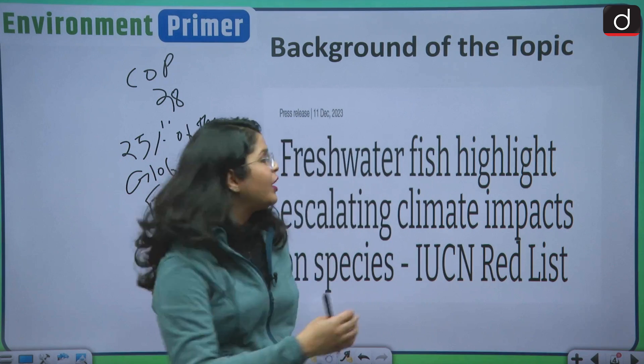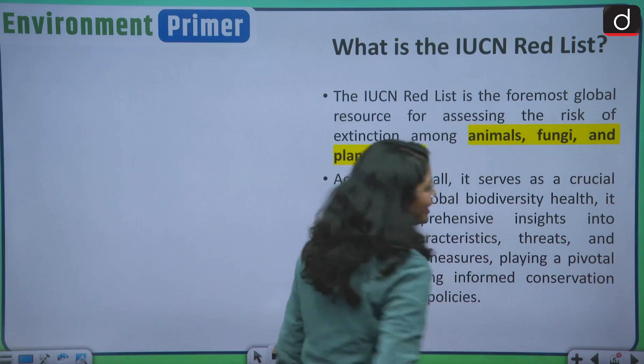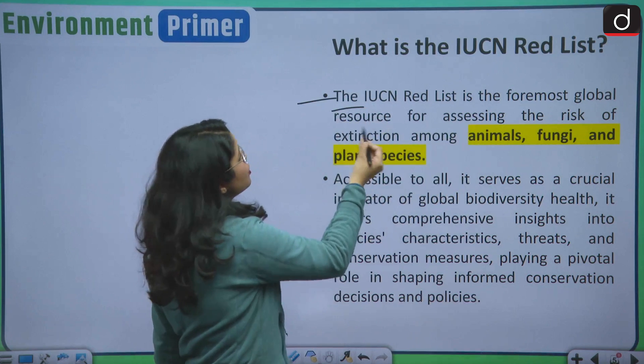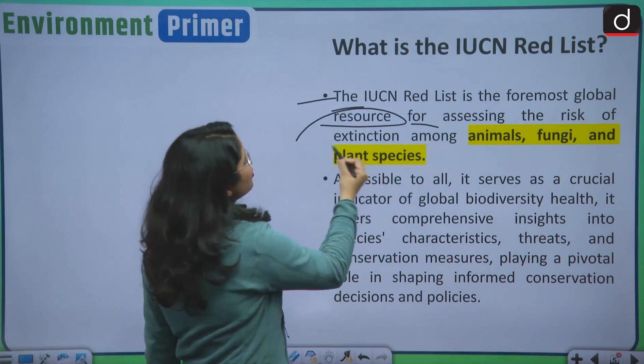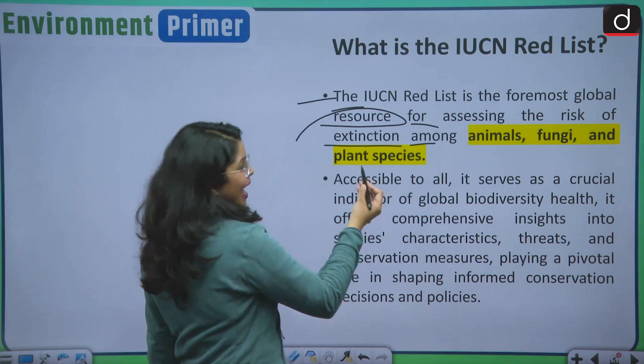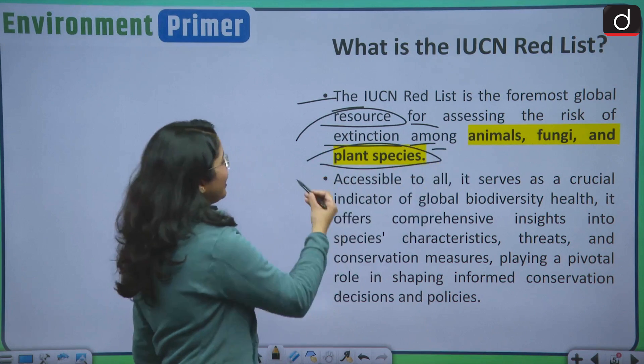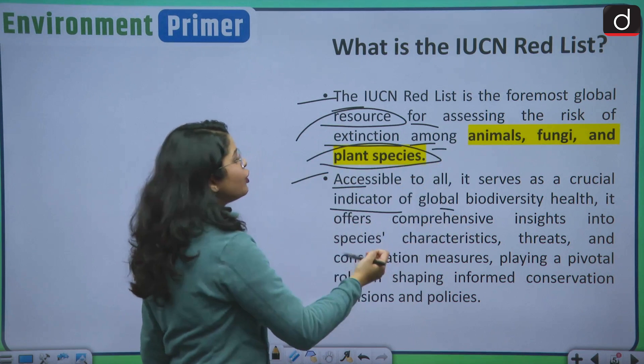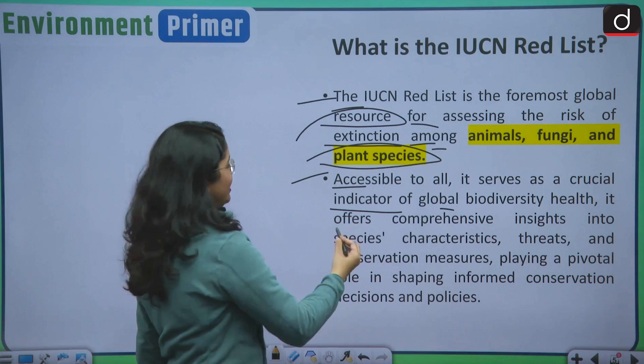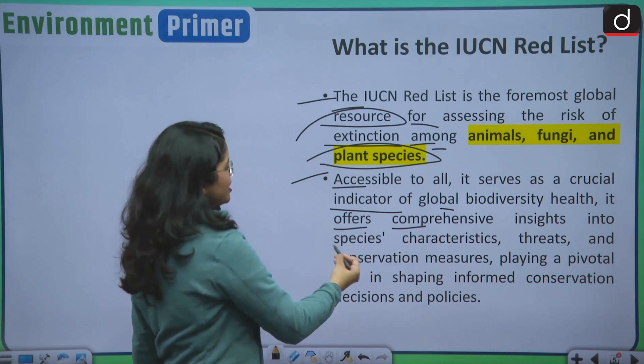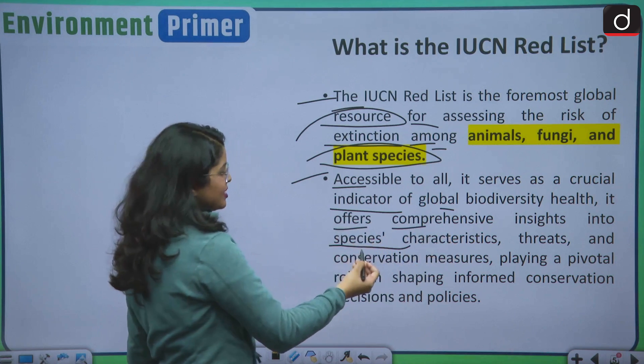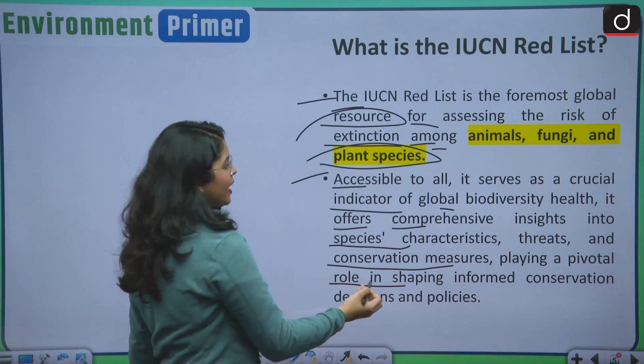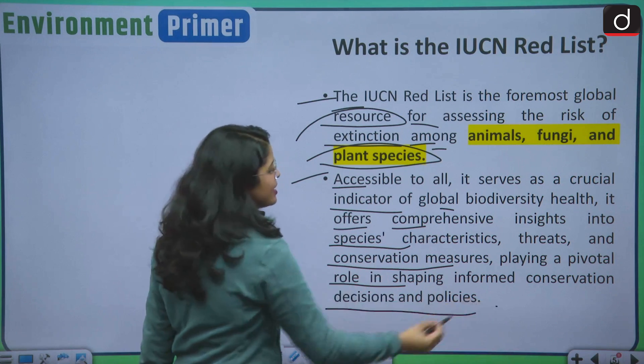This brings us to the moot question of our today's discussion that what exactly is this IUCN Red List? IUCN Red List is the foremost global resource for assessing the risk of extinction amongst animals, fungi and plant species. And it is accessible to all, it serves as a crucial indicator of global biodiversity health. It also offers comprehensive insights into the species characteristics, threats and conservation measures, playing a pivotal role in shaping informed conservation decisions and policies.